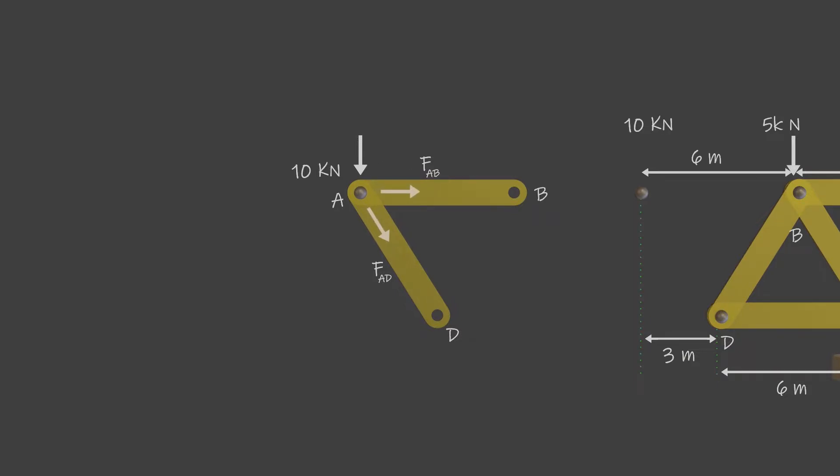Always assume the unknown member forces acting on the joint's free body diagram to be in tension, that is, the forces pull on the pin. If this is done, then numerical solution of the equilibrium equations will yield positive scalars for members in tension and negative scalars for members in compression.